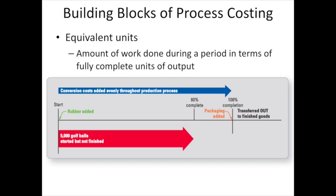If we look at materials, we have two different kinds. We have rubber, which is added at the very beginning of the process, and packaging, which is added at the very end. The golf balls are 80% complete — 5,000 of them are 80% complete at the end of the period. Since rubber is added at the very beginning, they're all completed as to rubber; rubber won't be added anymore during the process.